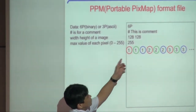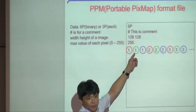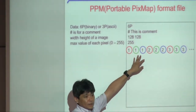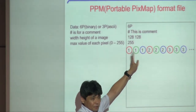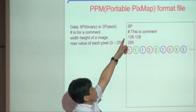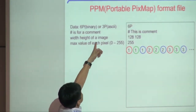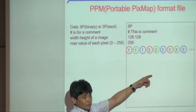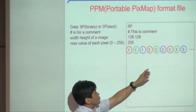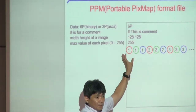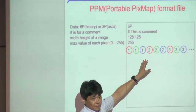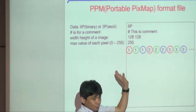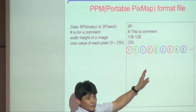This is a typical content of an image file. The first line specifies whether the data is text or binary. P6 means binary, and P3 means ASCII — that is, a text file. If you put P6, you write image data as byte data. If you put P3, you write image data as text data.